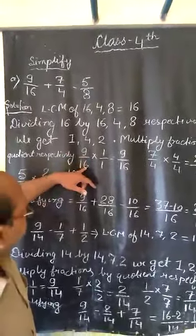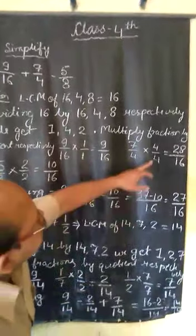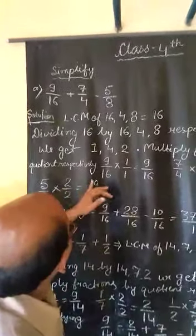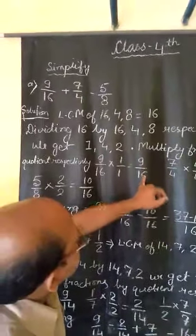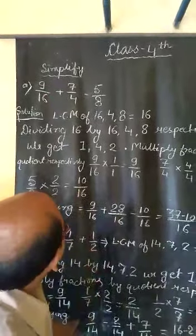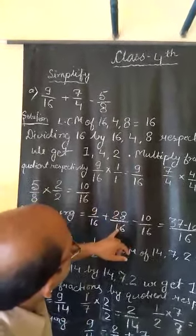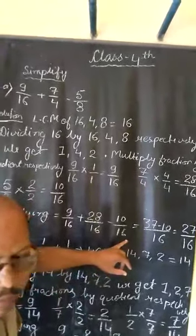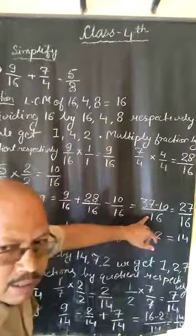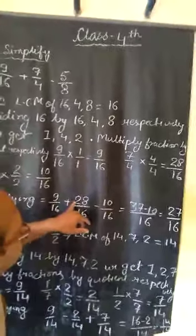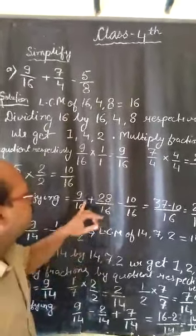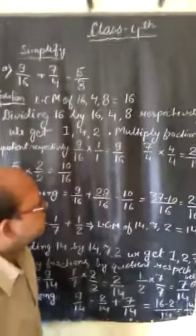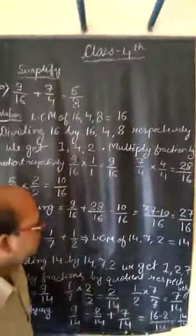After multiplying 9 upon 16 by 1 on both sides, we get 9 upon 16. After multiplying 7 upon 4 by 4 on both numerator and denominator, we get 28 upon 16. After multiplying 5 upon 8 by 2, we get 10 upon 16. These are like fractions: 9 upon 16, 28 upon 16, and 10 upon 16. The denominator is the same, so we add 9 and 28 to get 37, and this sign is positive. Subtracting 10, we get 27 upon 16. This is our answer.